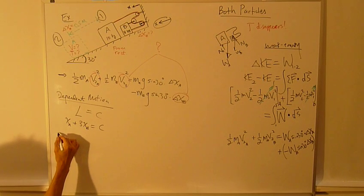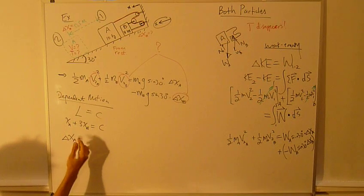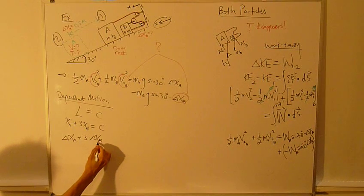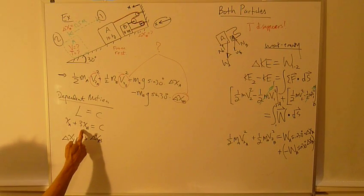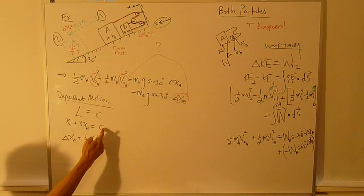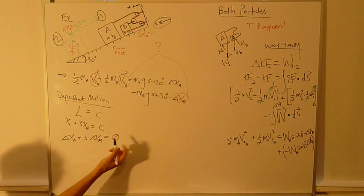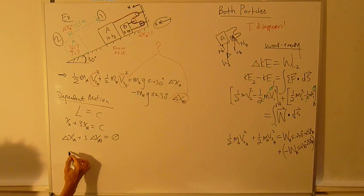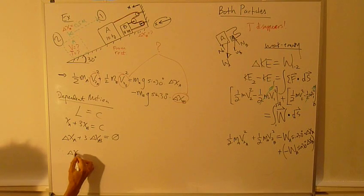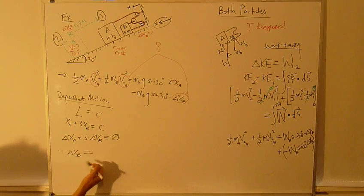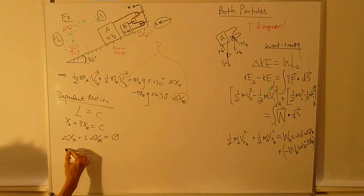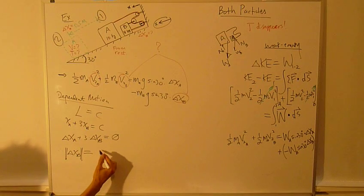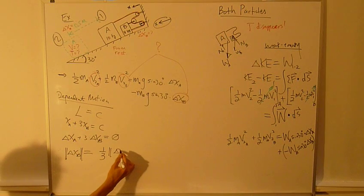So if I consider delta, the change of this, plus 3 delta XB, change of this variable plus 3 times change of this variable, right hand side, since this is constant, so any change of that is zero. So therefore, delta XB equals, I want to consider just the absolute value, just the magnitude, equals one-third of delta XA.